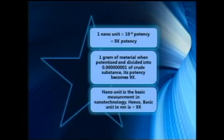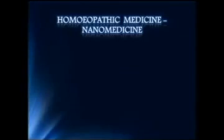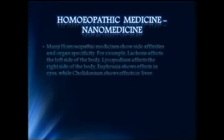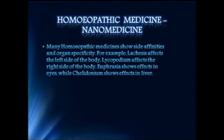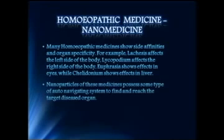When homeopathic medicines are diluted and potentized, kinetic energy in succussion or mechanical energy in trituration is converted and stored as potential energy. By the process of nanopharmacology, homeopathic medicines become soft as a dewdrop and at the same time strong as a tsunami wave. In homeopathy, one nano unit is equal to 10 to the power minus 9 potency, i.e. 9x potency, and the basic unit is 9x. Many homeopathic medicines show site affinities and organ specificity, with nanoparticles possessing some type of auto-navigating system to find and reach the target diseased organ. Nanotechnology can convert these nanoparticles into nanoballs, which can be inserted with medicines to reach the site easily and safely.